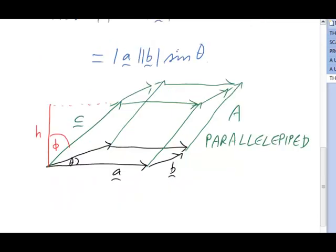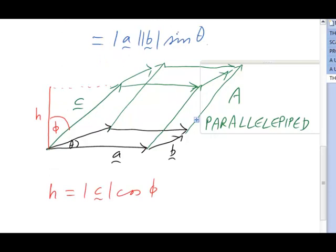We can write the magnitude of the height h as the length of c times cos of phi. Now that we've got the area of the base and the height of the figure, we can write down an expression for its volume, v.